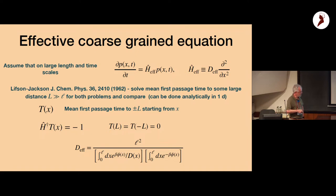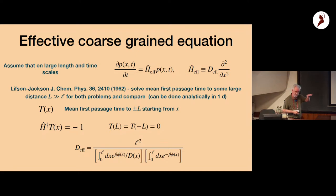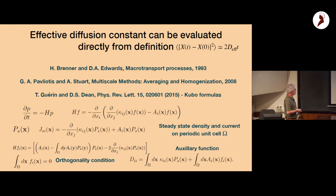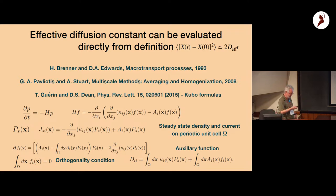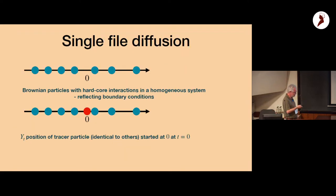They solved this using a generalized first passage time argument, which is more complicated because of the drift — you have to look at moments of the first passage time. But essentially the Brenner formalism already contains all of these things: you write down a general formula and then work through the algebra, which is actually quite complicated.